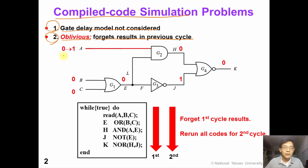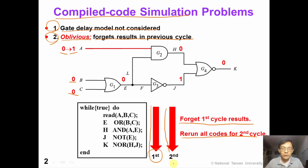For example, given this circuit, we apply zero zero zero in the first cycle, so we run the code for the first time. And then in the second cycle, we only change input A to be one. Because the compile code simulation forgets all the results in the first cycle, we will need to rerun all the code for the second cycle. This is a waste of CPU time because only signal A changes in the second cycle. So can we do it in a more efficient way?